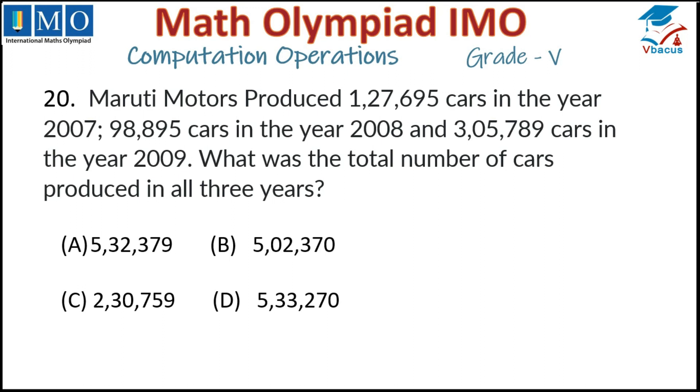According to the statement we have to add 127,695, 98,895, and 305,789. If you add them, 5 plus 5 is 10, plus 9 is 19, carry 1. 9 plus 8 plus 1 is 18, plus 9 is 27, carry 2. 6 plus 8 is 14, plus 7 is 21, plus 2 is 23, carry 2. 7 plus 8 is 15, plus 5 is 20, plus 2 is 22, carry 2. 2 plus 9 is 11, plus 0 is 11, plus 2 is 13, carry 1. 1 plus 3 is 4, plus 1 is 5.